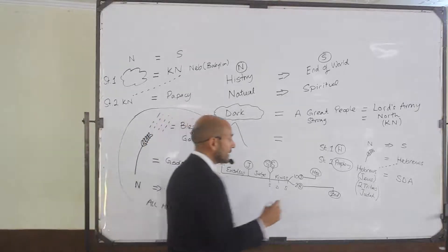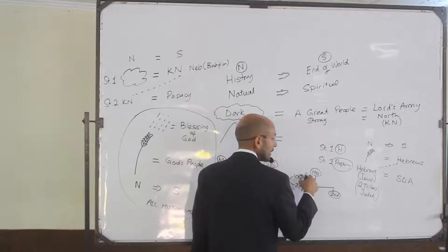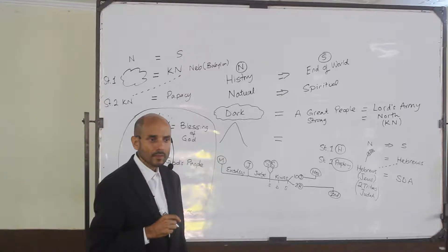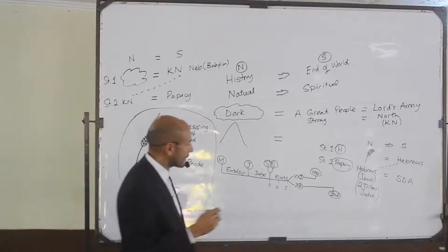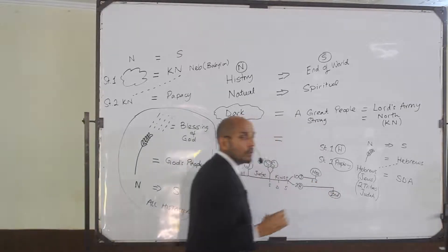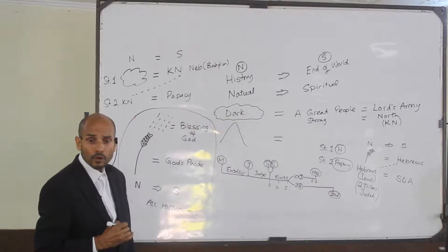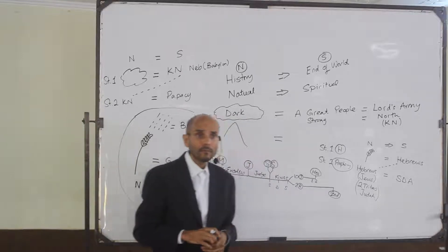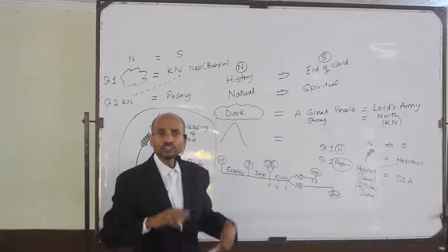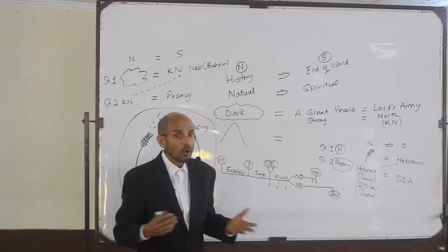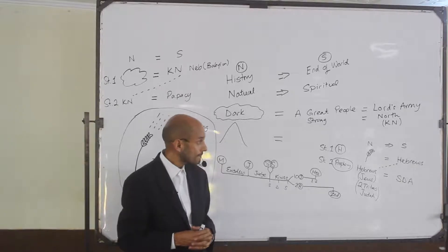This event — which is in chapter 1 verse 2 of Joel — asks, 'Has this thing happened before?' referring to the total destruction of a people, and the answer was no.